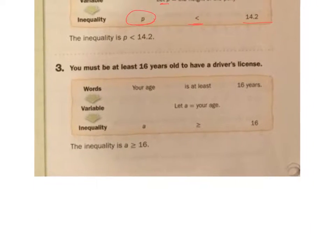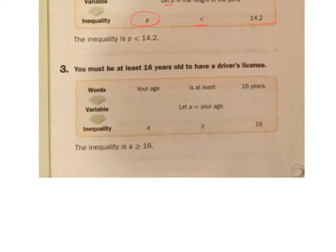Number three, you must be at least 16 years old to have a driver's license. Must be at least, at least. It means you can be 16, but you have to be 16 years at least. 16 or older to have a driver's license. So words, your age is at least 16. We're going to have A be your age. So the inequality is A has to be greater than or equal to 16. That's how you say it with words, with a variable, and then writing the inequality.